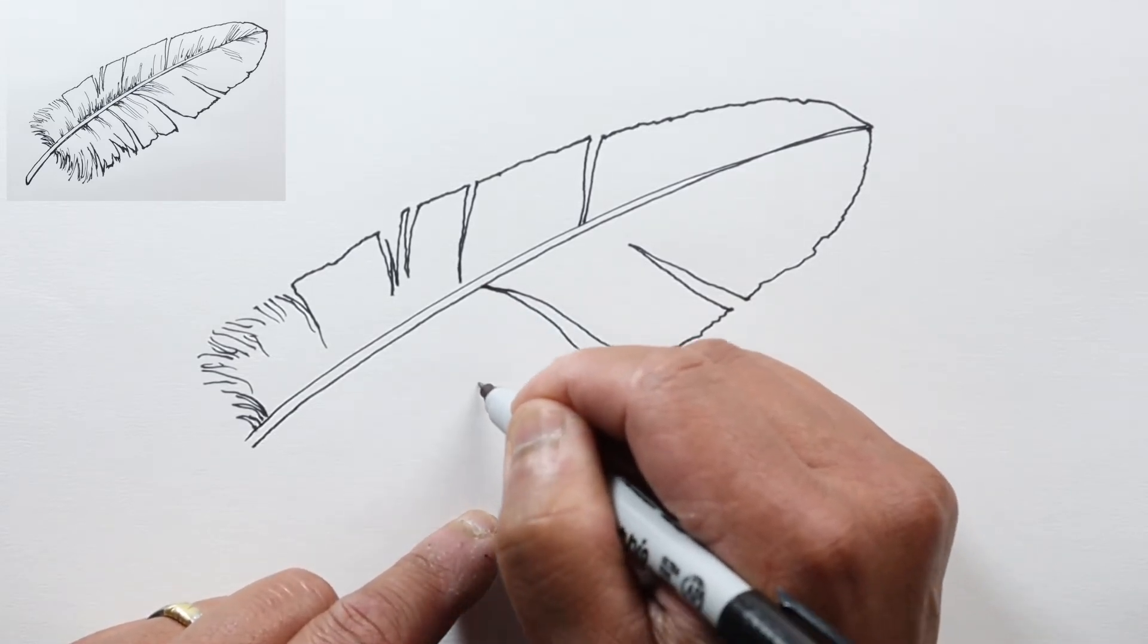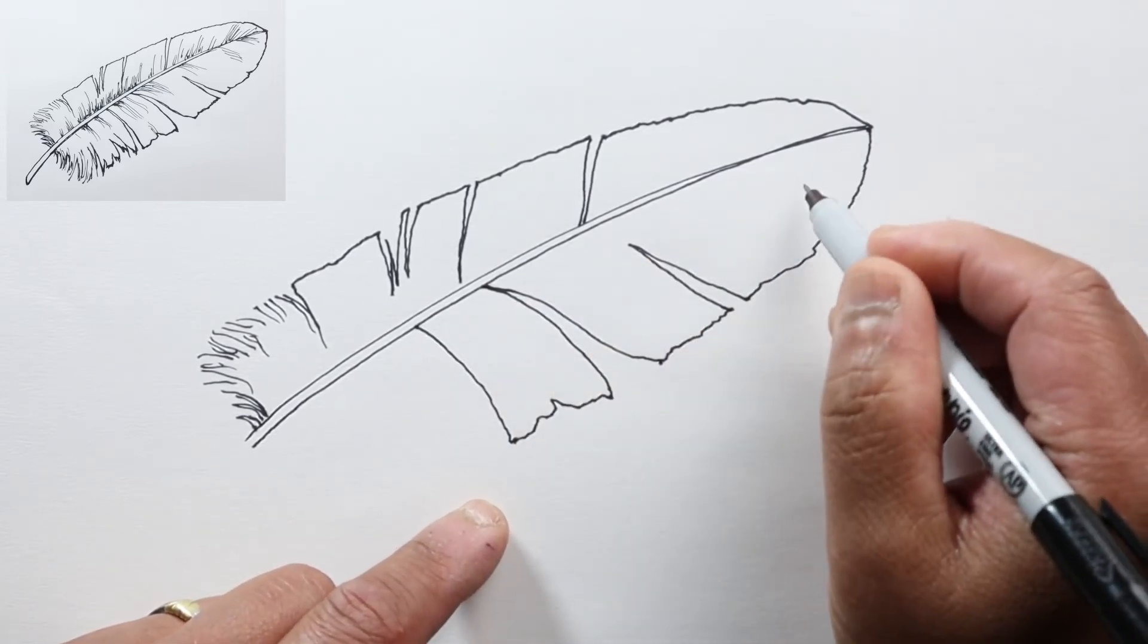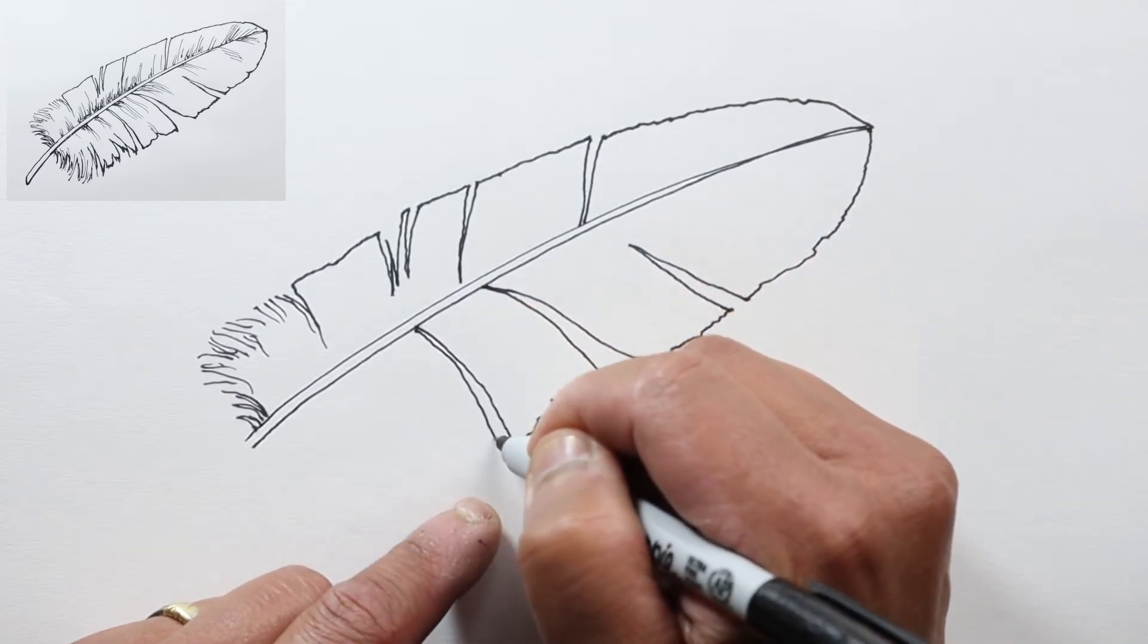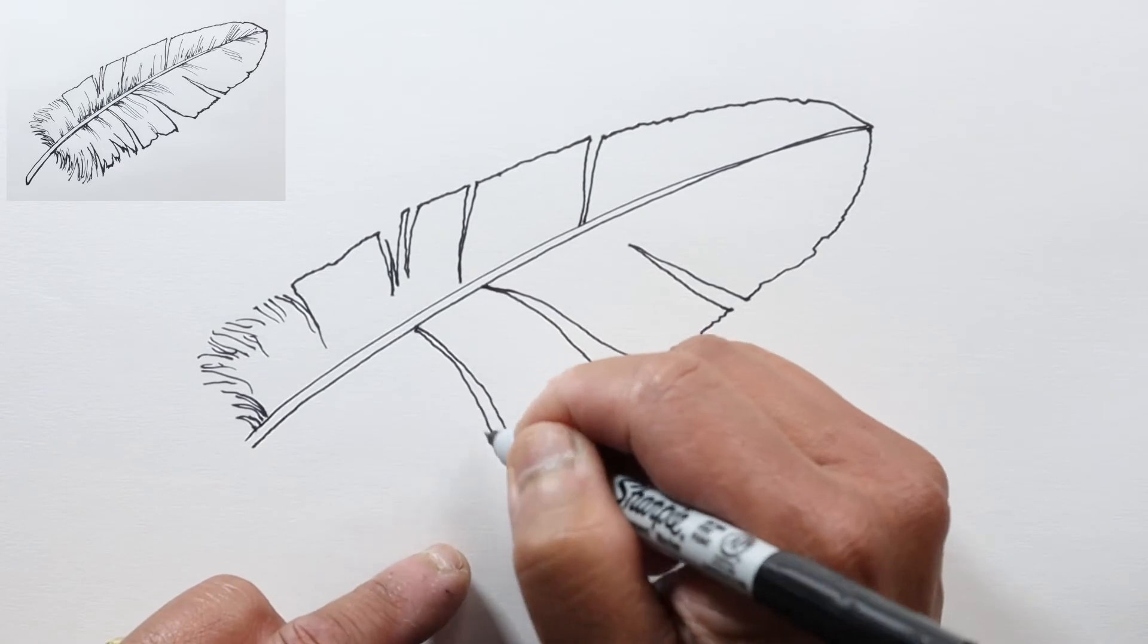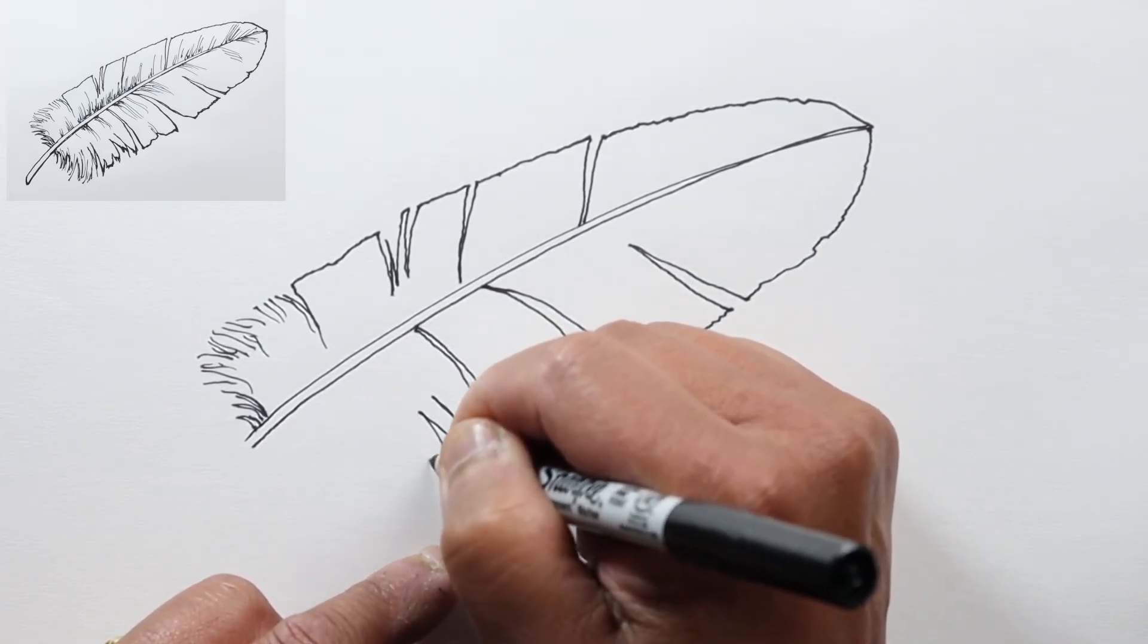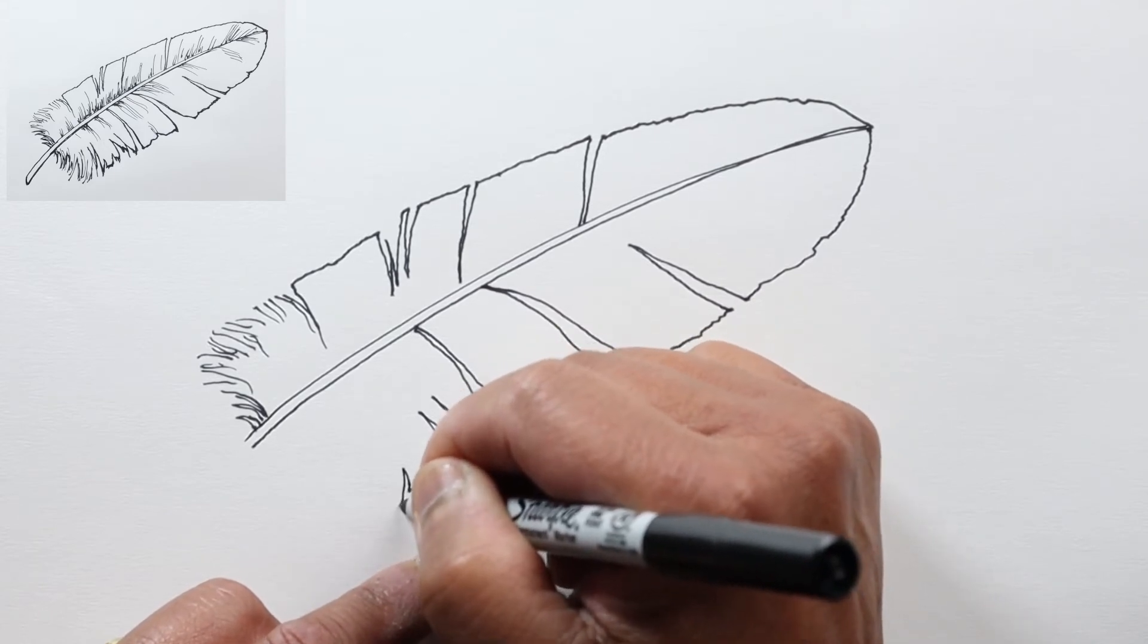And now we can try to make this part fairly uneven. Usually the tip stays together longer, and then it separates more closer to the base by the after feather. So here I'm just kind of showing that it's separating quite a bit by adding more lines that go towards the rachis here.